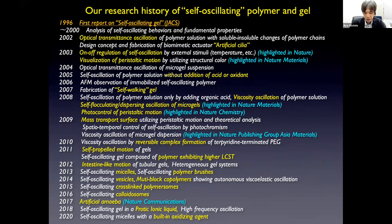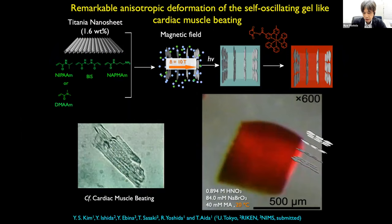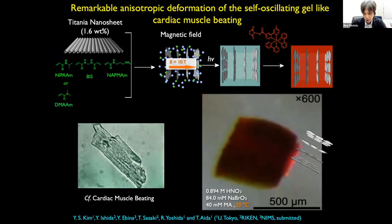Since the first report on self-oscillating gels, for 25 years we have studied such self-oscillating polymer gel systems. This is a recent result: by introducing titanium nanoseeds into the gel networks, we cause anisotropic motion. One unidirectional swelling oscillating motion can be induced. Such behavior is very similar to a muscle-beating motion.